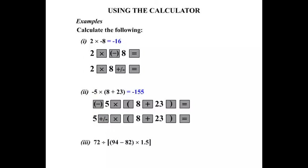A third example. 72 divided by, and then in brackets, we've got two sets of brackets, one inside the other. 94 minus 82 in one bracket, and we're multiplying that by 1.5.